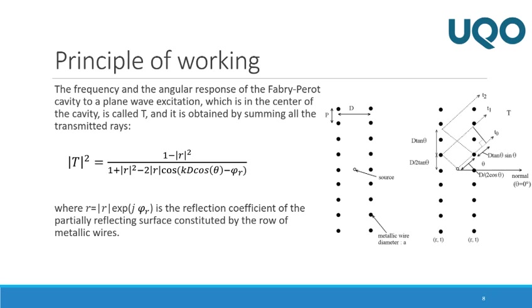The frequency and the angular response of the Fabry-Perot cavity to a plane wave excitation, which is in the center of the cavity, is called T and is obtained by this formula that you can see in the middle of the slide. In this formula, R is a reflection coefficient of the partially reflected surface constituted by the rows of the metallic wires.